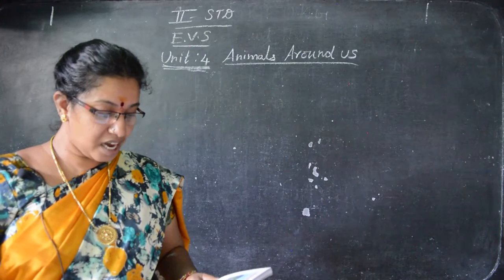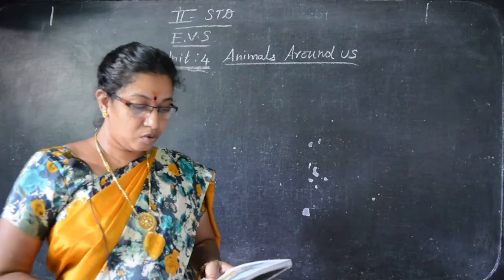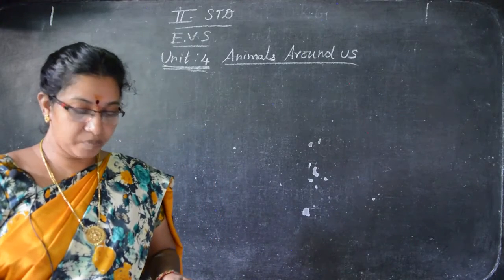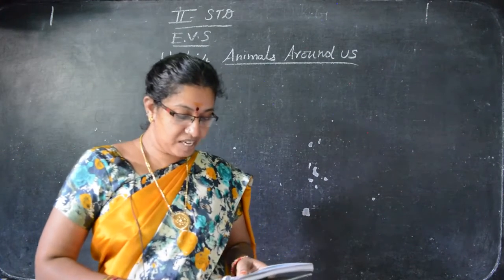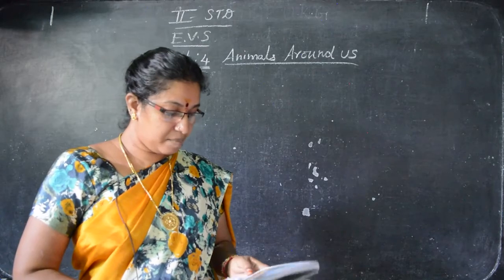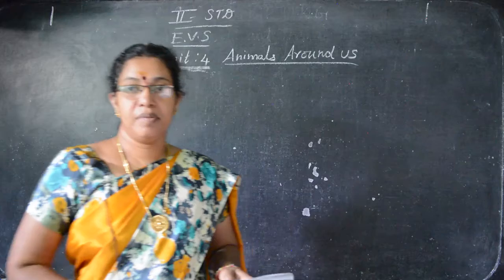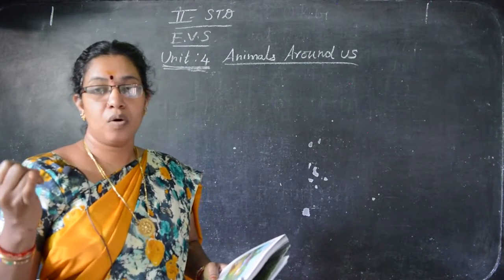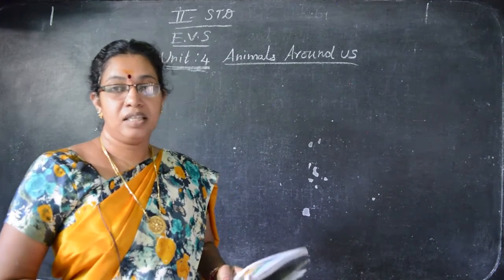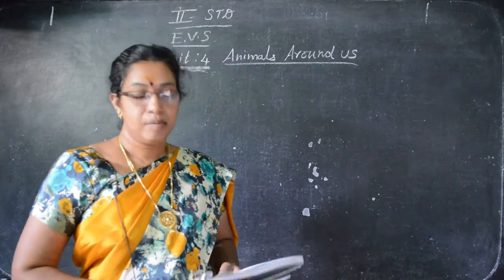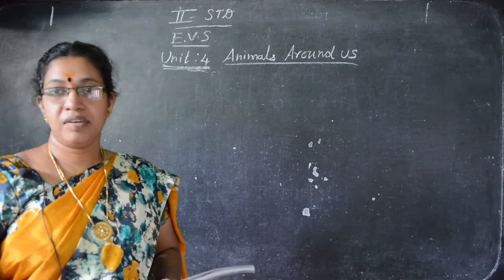These animals are found in and around our homes. We take care of them and they help us in several ways. Some animals are called domestic animals. Some domestic animals help us in our farm work — they are called farm animals. Animals like cow and ox help us; the ox plows the land and the cow gives milk.